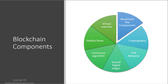When it comes to components, there are really six: cryptography, peer-to-peer networks, a shared digital ledger that's distributed throughout the blockchain, a consensus algorithm, rules that validate the transactions, and lastly some kind of virtual machine. That virtual machine is typically a logical component implemented as part of a node generally, as part of that ecosystem.